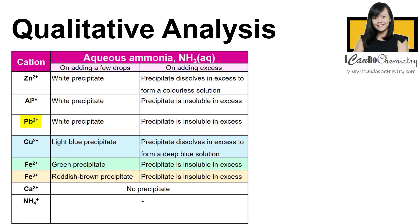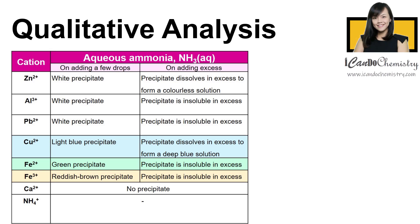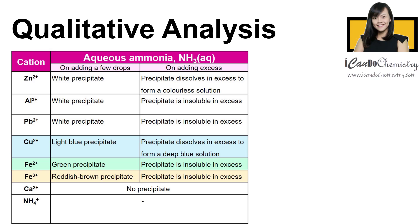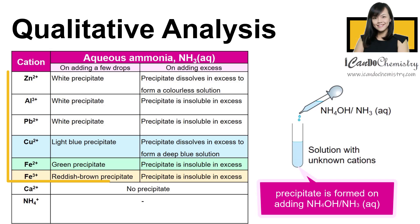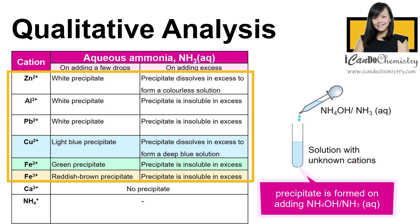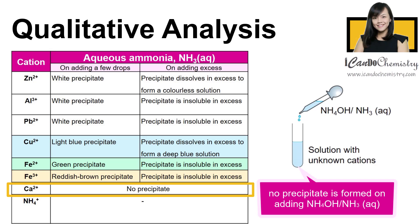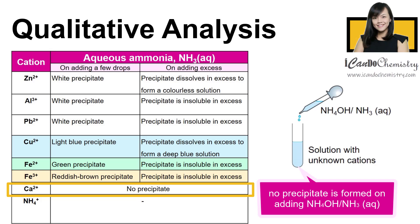We also need to identify lead(II) ions and zinc ions. For easy memory, you may divide the cations into two different groups: one group where a precipitate will form with aqueous ammonia, and another group where a precipitate will not form with aqueous ammonia.